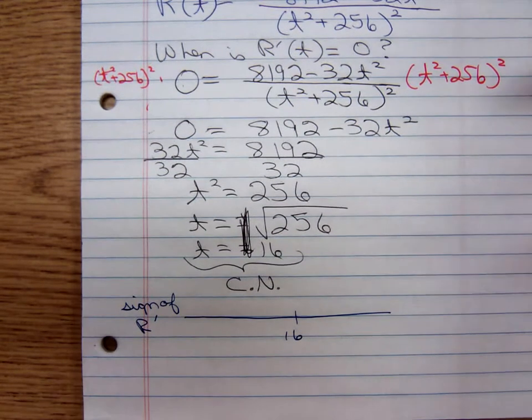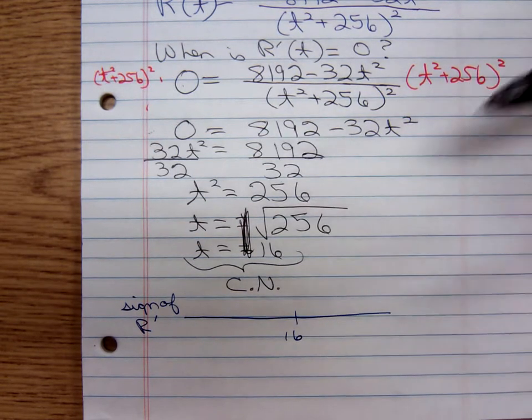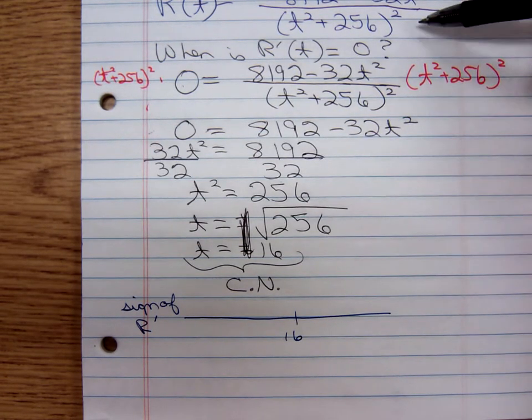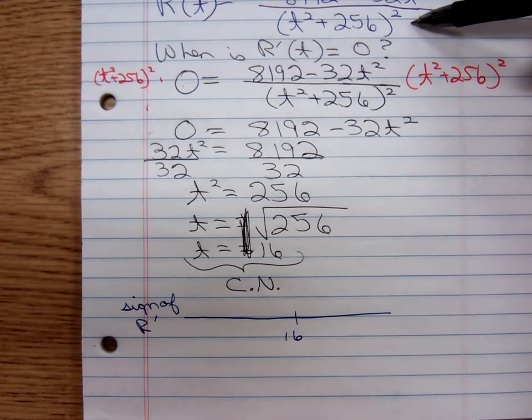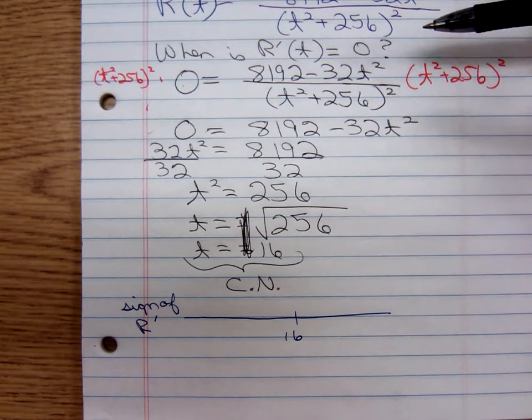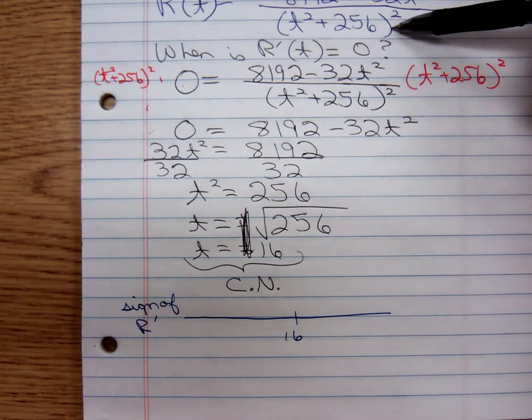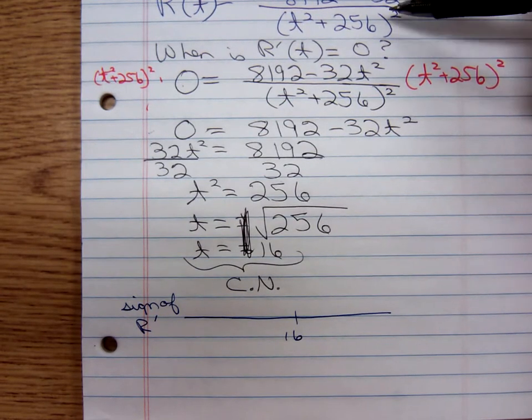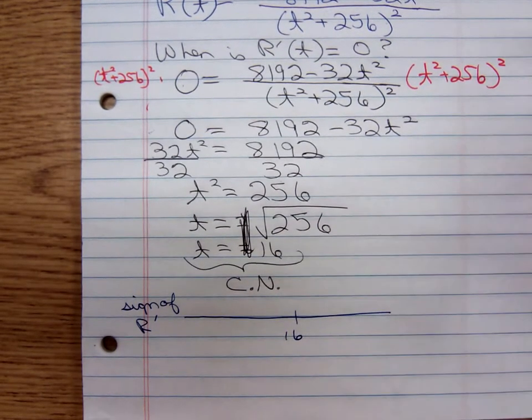I should have mentioned this though: a fraction equals zero when the numerator is zero—that's where we got the 16. A fraction is undefined when the denominator is zero. Will that denominator ever be zero? t² + 256 all squared. That's never going to be zero. The smallest that denominator can be inside those parentheses is 256. So this fraction is never undefined. The only critical number we have is that positive 16.